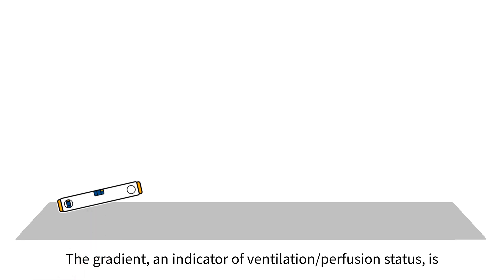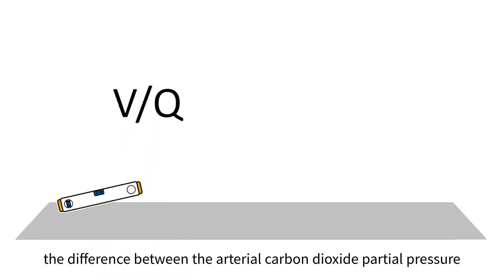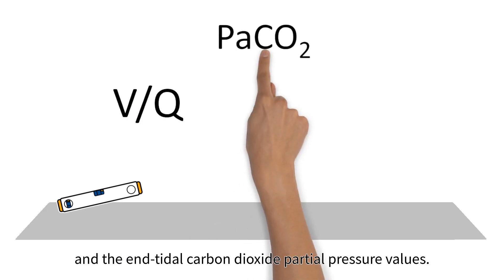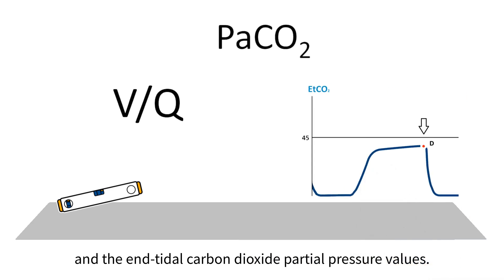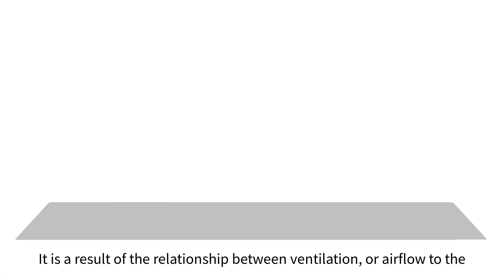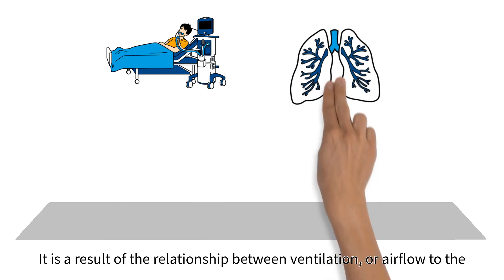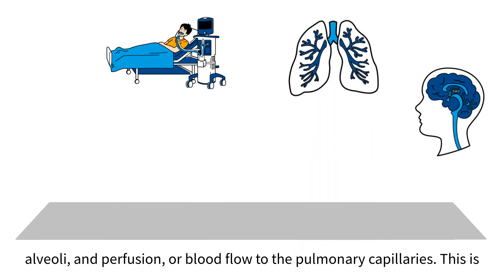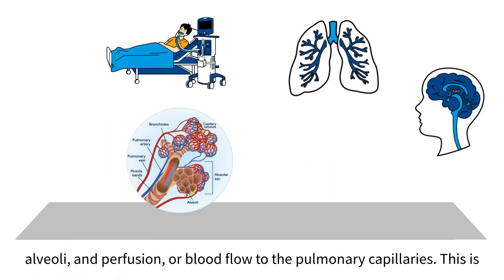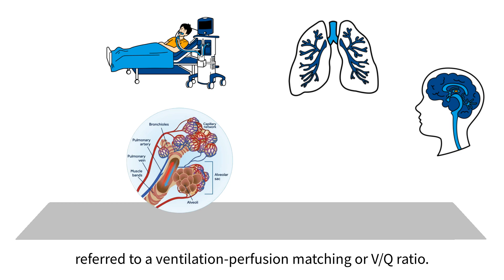The gradient and indicator of ventilation perfusion status is the difference between the arterial carbon dioxide partial pressure and end-tidal carbon dioxide partial pressure values. It is a result of the relationship between ventilation, or airflow to the alveoli, and perfusion, or blood flow to the pulmonary capillaries. This is referred to as ventilation-perfusion matching or VQ ratio.